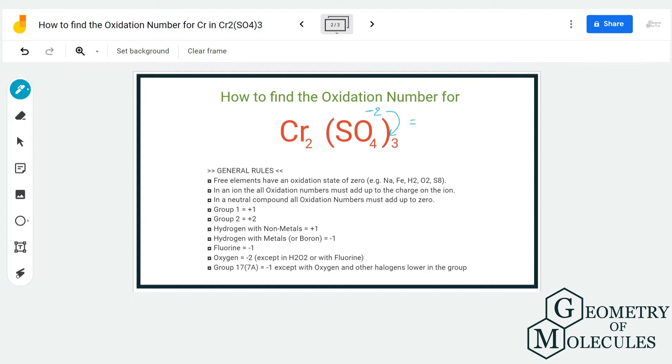So in total, the charges on SO₄ is minus 6. And as I have mentioned earlier, the total charges for this compound is zero. So as it has the charges of minus 6, there will be charges of plus 6 on chromium. But here also, there are two atoms of chromium present.